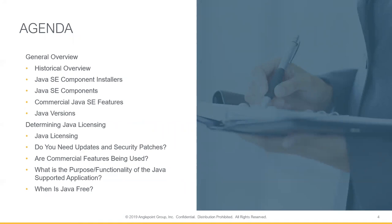We're going to run through a few key questions that should highlight the binary code license agreement to help you determine Java licensing — whether it's free or not, and when it becomes licensable. The first question we'll touch on is whether you need updates and security patches, since the new changes to Java are primarily around support. Next we'll focus on commercial features, whether they're in use, and when Java is actually free versus when it's licensable.